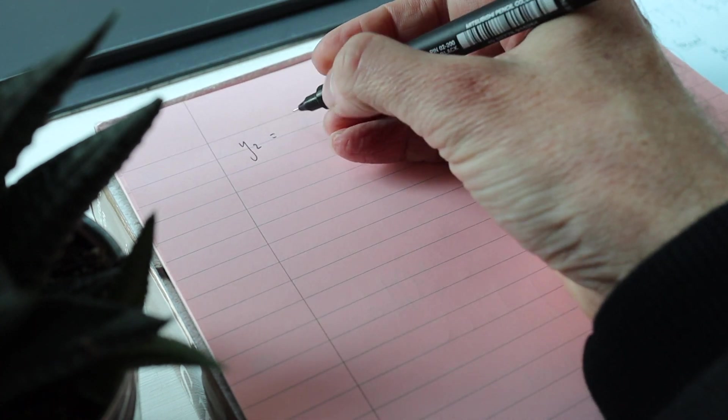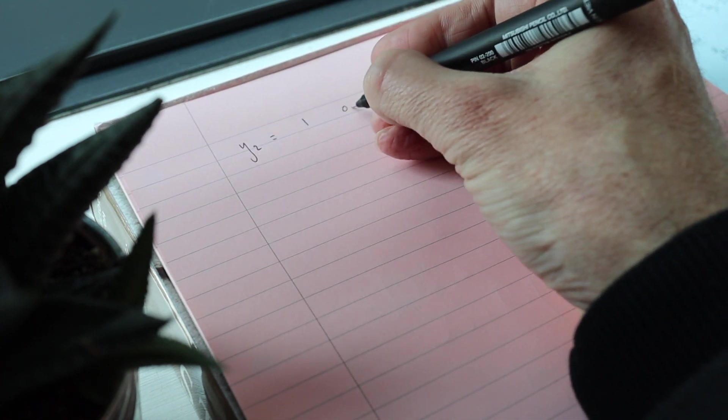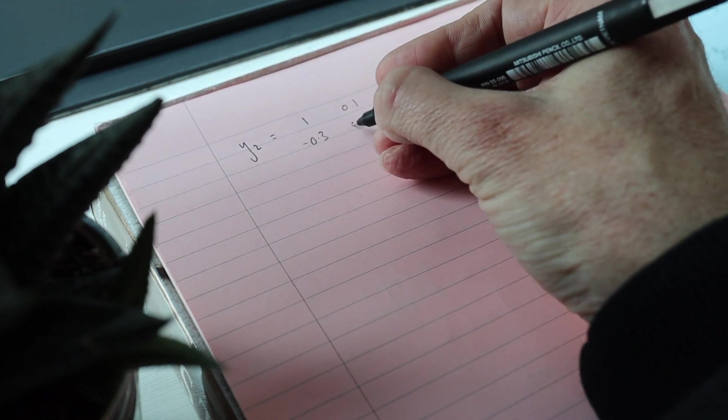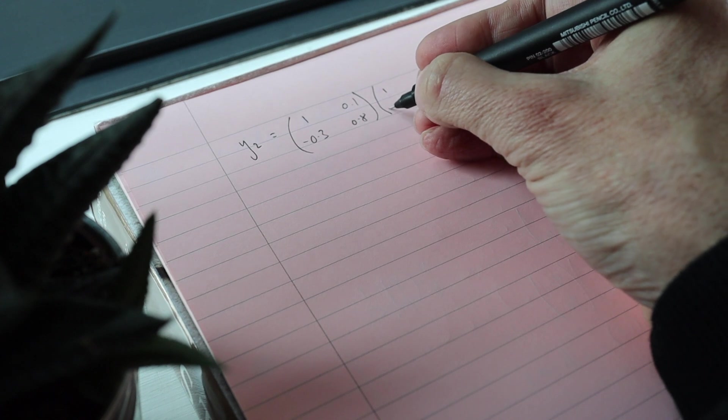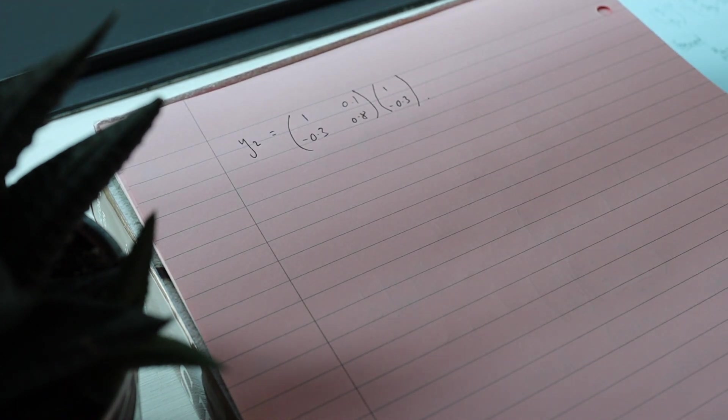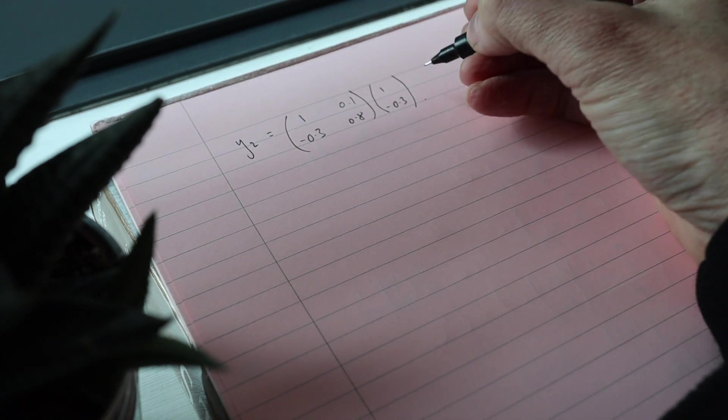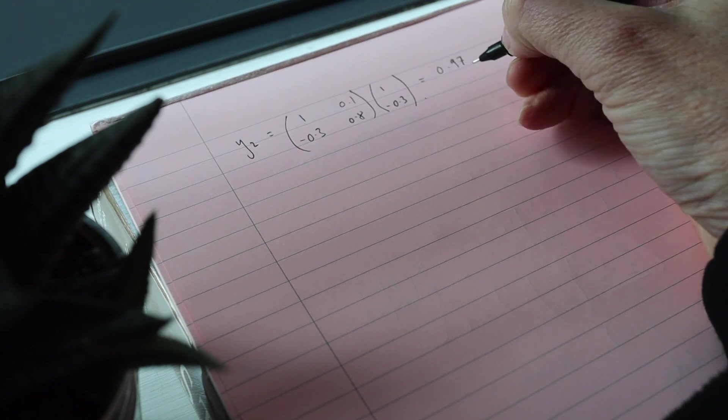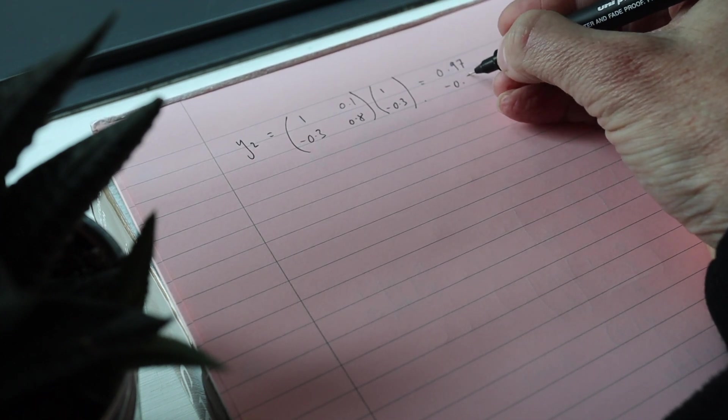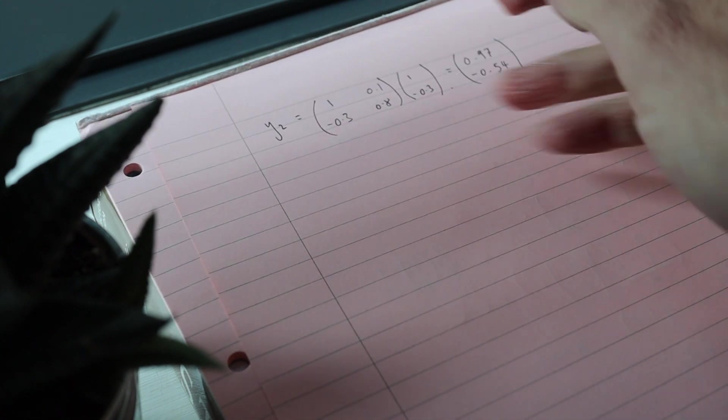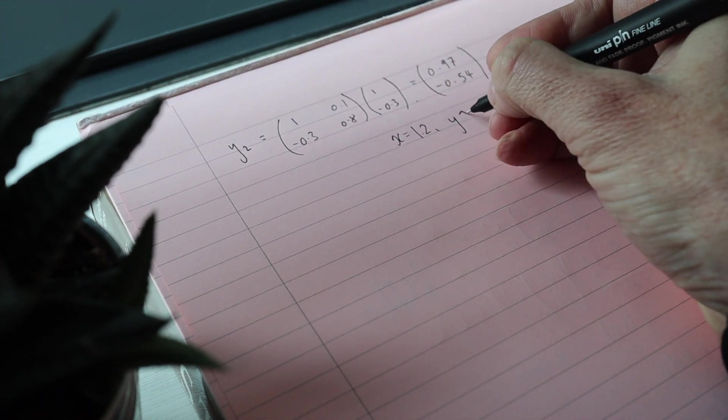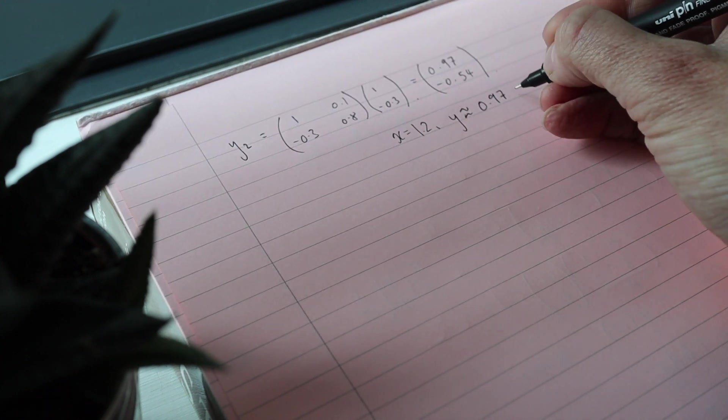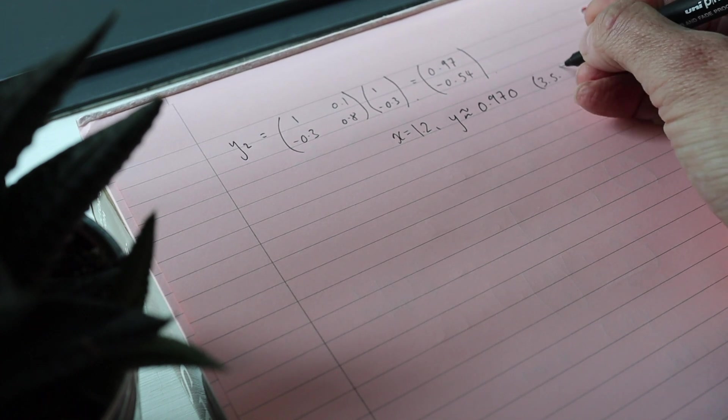So if I want the next iteration, it's going to be y2, the next one. It's going to be that same matrix 1, 0.1, minus 0.3, 0.8 times by the estimate I got for 1.1. And then I'm going to multiply that out, that'll be 0.97 and that'll be minus 0.54. So when x is 1.2, y is approximately 0.97 to 3 significant figures.